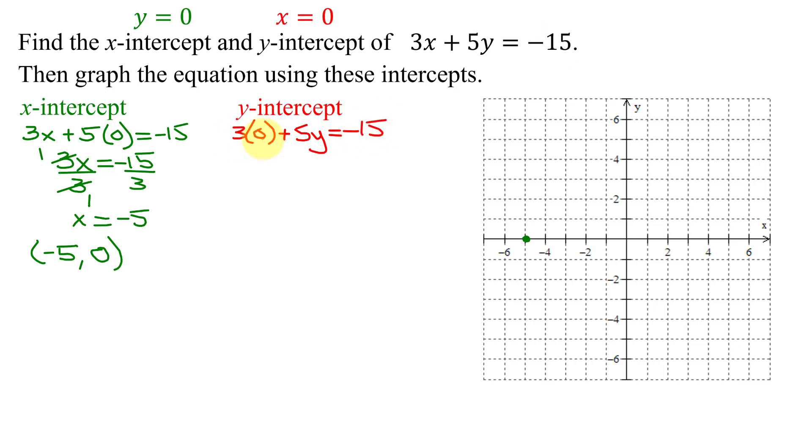3 times 0 is 0, 0 plus 5y is just 5y. So I have 5y equals negative 15. Divide both sides by 5, and I get y equals negative 15 divided by 5 is negative 3.